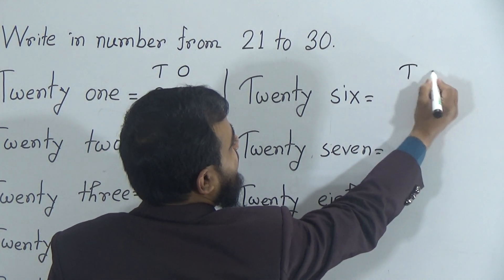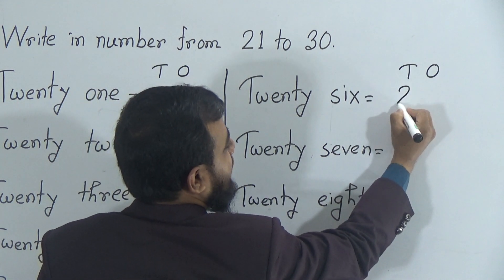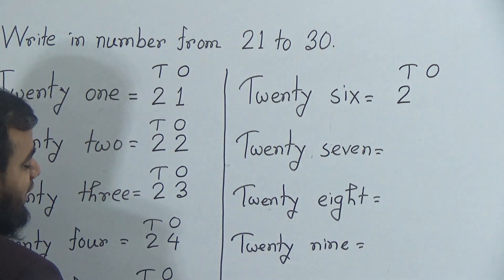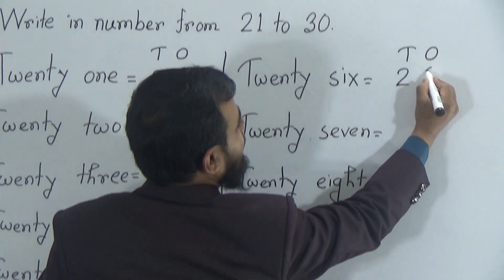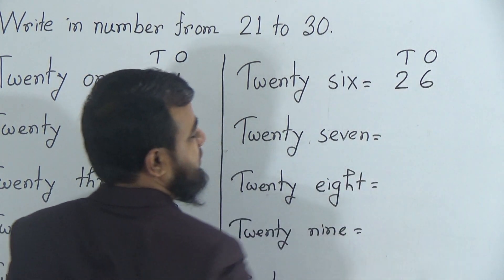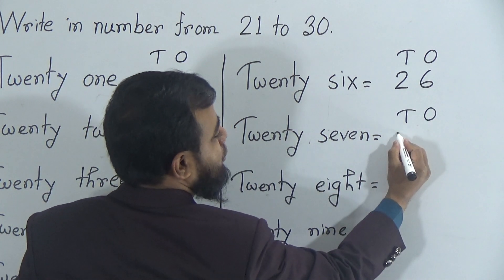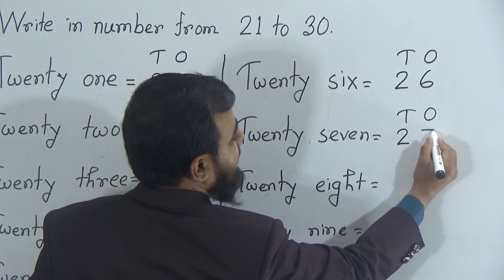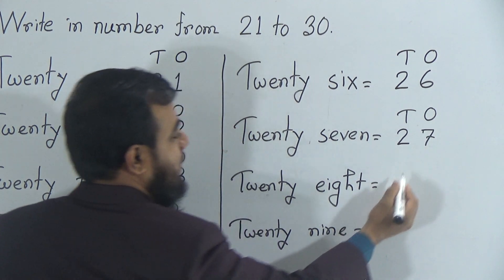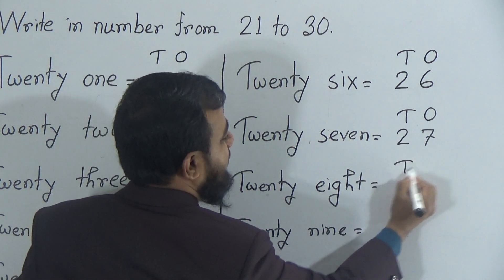To write down twenty-six, we identify the place value again: two in the tens position, and the ones position increases by one — the previous number was five, so now it is six. Two and six makes 26 — two tens and six ones makes 26. Now 27: two in the tens place, seven in the ones place. Two and seven makes 27 — two tens and seven ones makes 27.